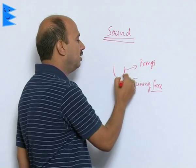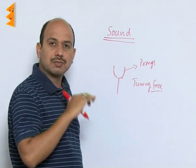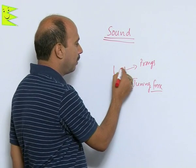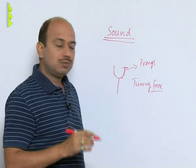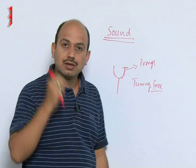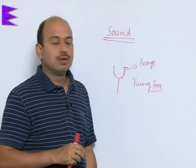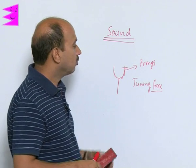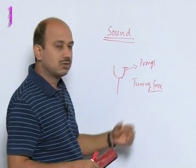If you hit these prongs on any hard substance, that means a rubber pad, not very hard, these prongs start vibrating like this. When these prongs vibrate, you bring them near to your ear, you will find there is sound. The prongs are vibrating and producing sound. Sound is produced here due to vibrations.